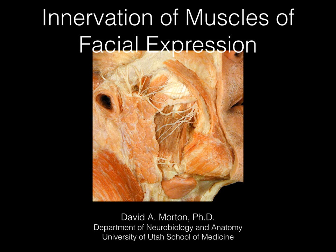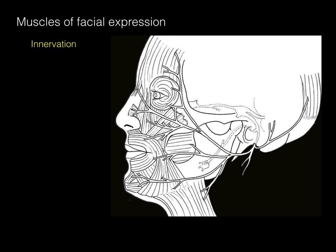Let's talk about innervation of the muscles of facial expression. The innervation of muscles of facial expression is via cranial nerve number seven, the facial nerve proper, and it's specifically the branchial motor division of this nerve.